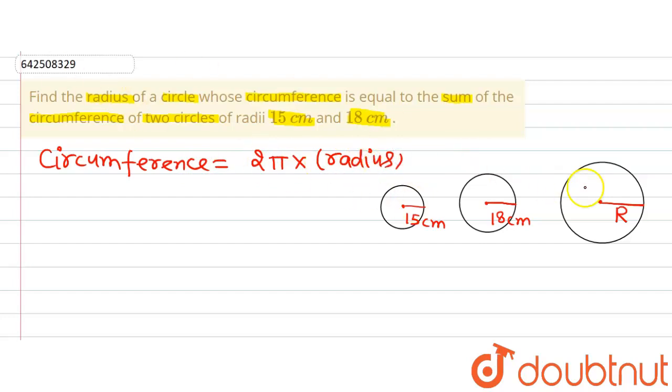Now according to question, the circumference of this circle, that means 2π, because the radius of that circle is capital R, so circumference of this circle will be 2πR, is equal to circumference of these two circles.